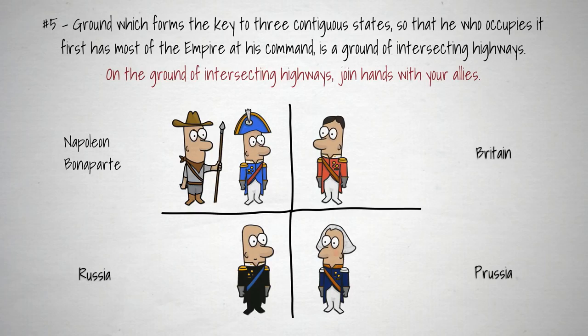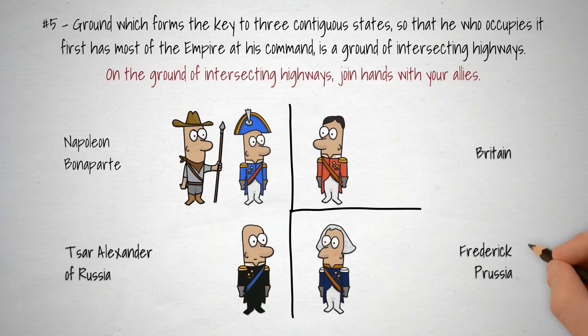In Polish territory, he met Tsar Alexander of Russia in peace talks and they became allies. Frederick William of Prussia was left out from the discussions and as a result, his empire lost out when the land boundaries were redrawn. If in a position where there are many rivals with different objectives and many possible directions to go, join together with allies who have similar interests to take control.